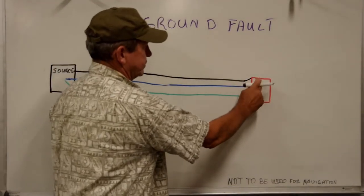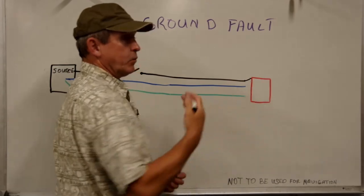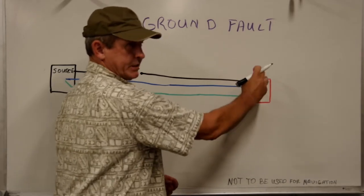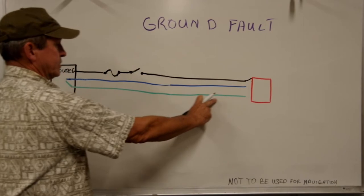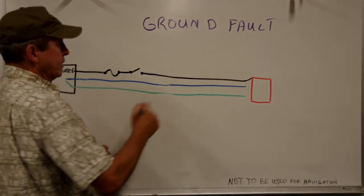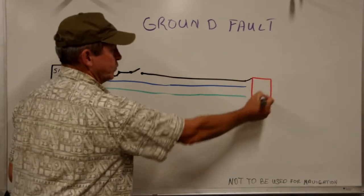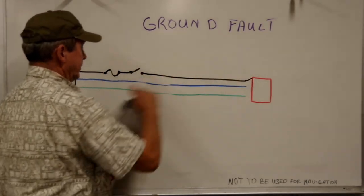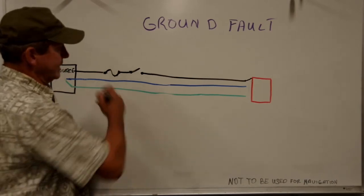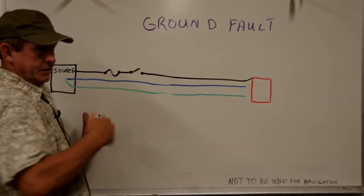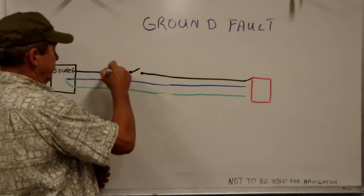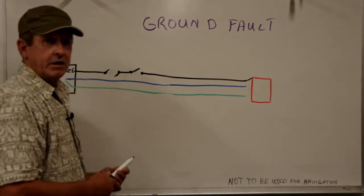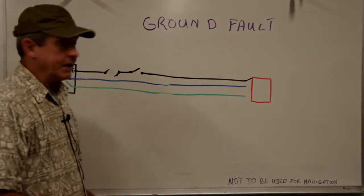What should happen is that the current energizing the chassis of our appliance can find a path back to its source along the AC safety ground. Because there's no resistance of the device between line and ground now, the current flow through here is going to exceed what we've designed this circuit to carry. So we should blow that fuse, trip that circuit breaker, turn off power — and that's how the AC safety ground should work in the case of a ground fault.